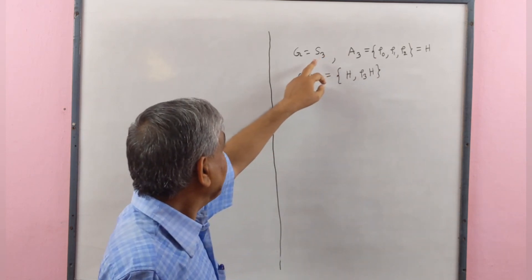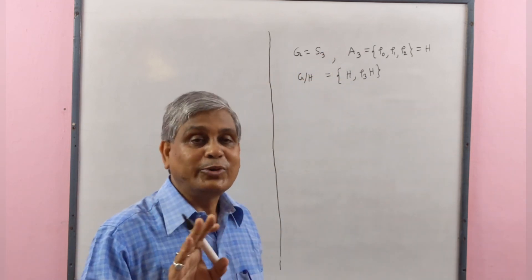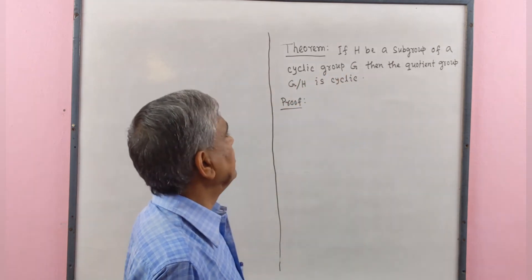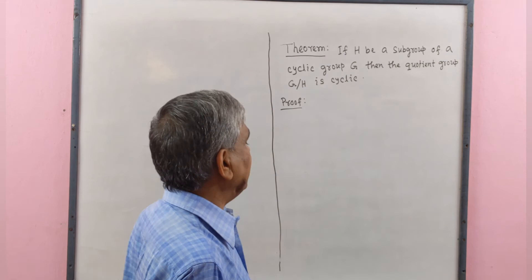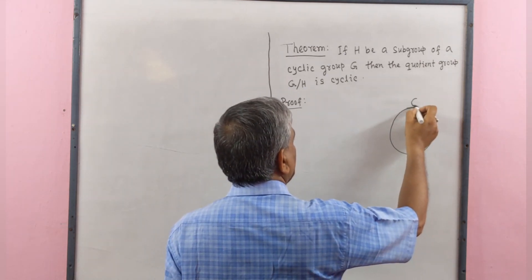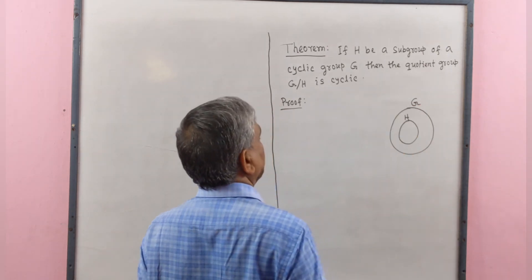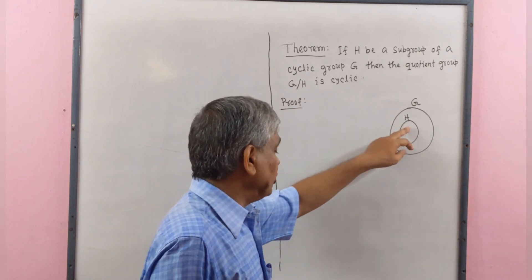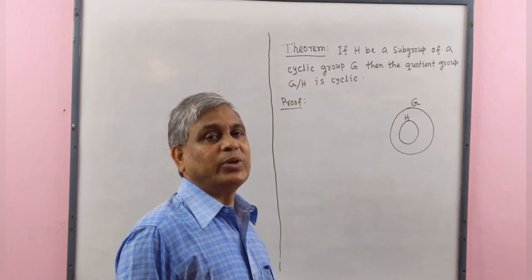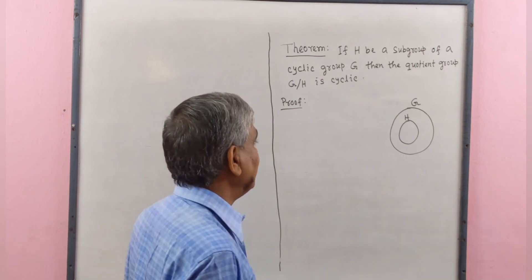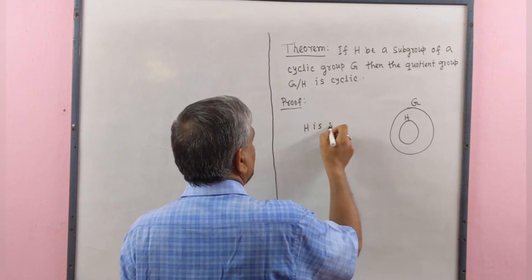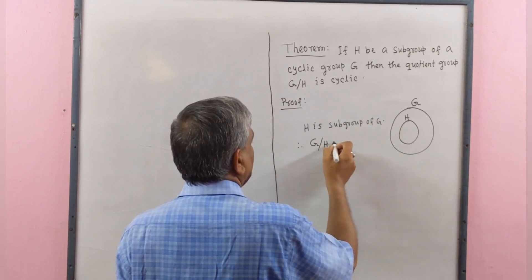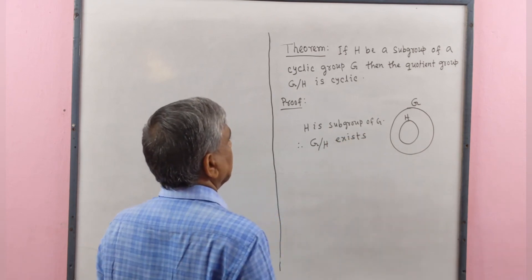Here it is clear that G by H contains elements H and ρ₃H, only two elements. We know that any group containing less than 6 elements is commutative, therefore G by H is commutative. But symmetric group S₃ is not commutative. Now we prove the next theorem: if H be a subgroup of a cyclic group G, then the quotient group G by H is cyclic.